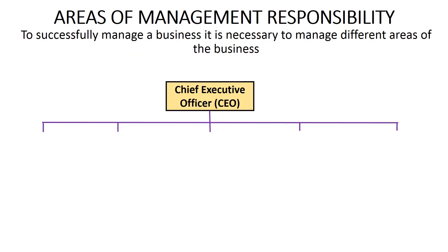To successfully manage a business it is necessary to manage different areas of the business. There are five areas that need to be managed, and we refer to these five areas as areas of management responsibility. Let's look at them now.